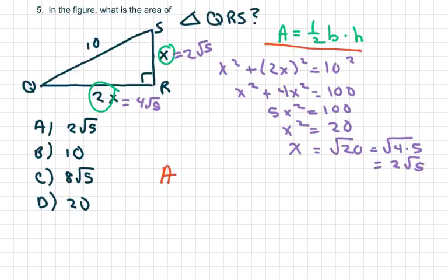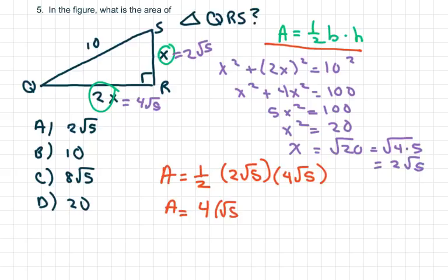So we have area equals 1/2 base, which is going to be 2√5. It doesn't matter what order you put this in. And the other one's going to be 4√5. And this is going to be area equals, 1/2 of 2 is just 1, so we have 4 times (√5)². So area is just going to be 4 times 5, which equals 20, which matches D.